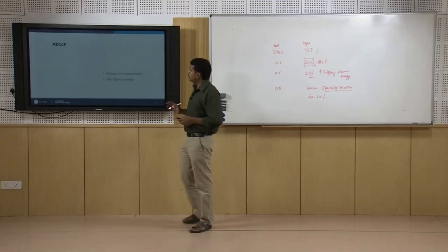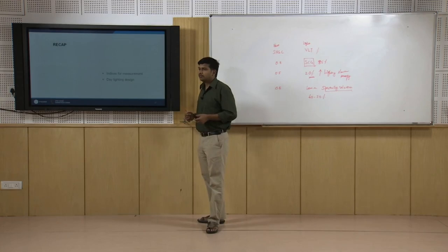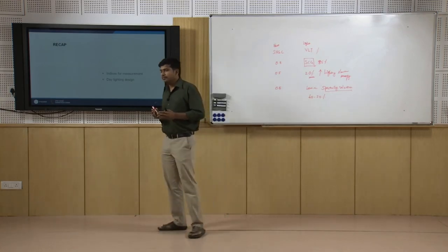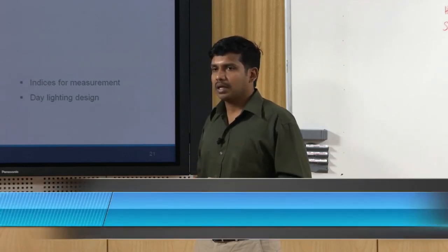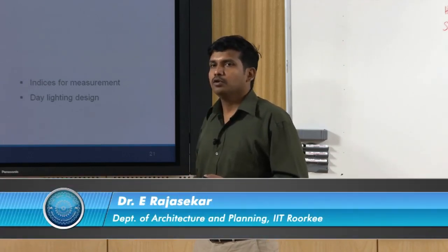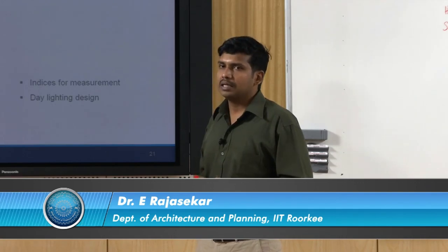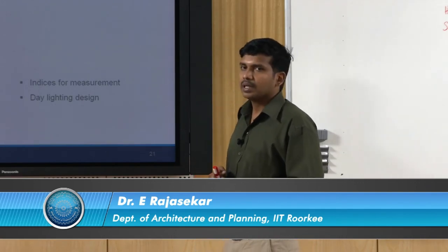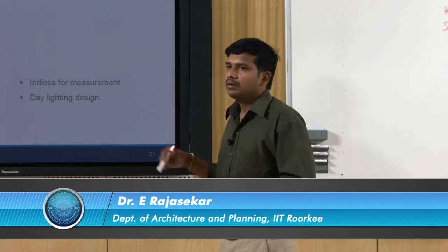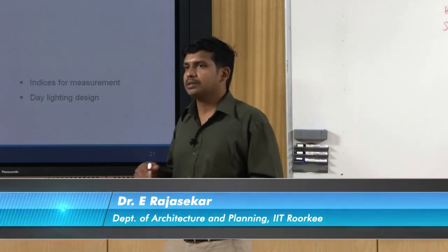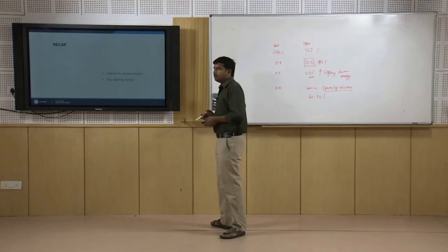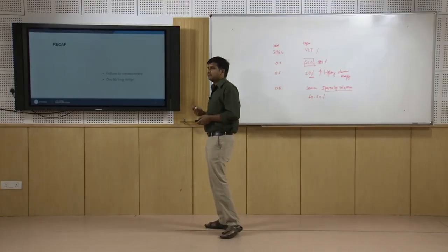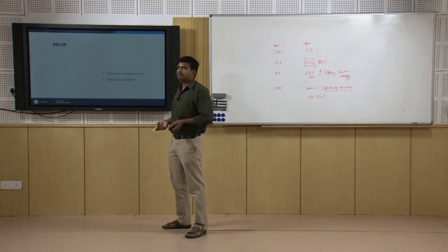As far as this module is concerned, we have introduced the concept of light and various indices used for measuring it — illuminance, luminance, luminous flux (lumens), luminous intensity (candela), and glare. We also looked at what is daylight, the parameters associated with daylighting design, what is daylight factor, and finally the impact of glass and glazing systems on available daylight inside a building. Thank you.